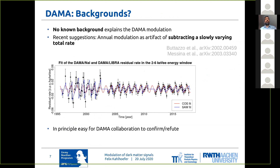Now to date, or at least to the best of my knowledge, there's no such known background, but there were two very interesting papers earlier this year which suggested that there could be an artificial annual modulation as a product of how a slowly varying total rate is being subtracted. So if you have a rate that slowly changes over time and then you average that rate over intervals of approximately one year, you essentially impose a modulation on your data.